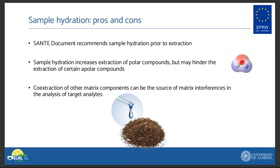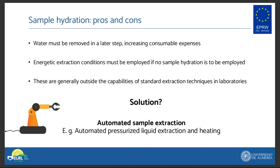Sample hydration is a standard procedure prior to sample extraction in many different multi-residue methods. The QuEChERS document itself recommends the addition of water prior to sample extraction. This step may increase the extraction of polar compounds from the sample, but it can hinder the extraction of certain nonpolar compounds, and it can also cause the co-extraction of matrix components that can compromise the analysis of certain target analytes. Furthermore, water generally has to be removed in a later step by means of magnesium sulfate, calcium chloride, or another desiccant agent, thus increasing consumable expenses.